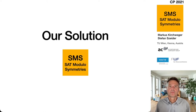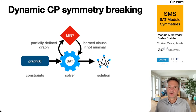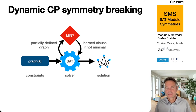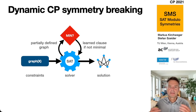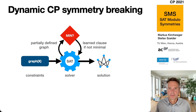We therefore propose SMS — SAT modulo symmetries — where we only encode the graph property x in terms of constraints, but then the SAT solver calls multiple times an external minimality check: a special propagator that can perform a complete minimality check.